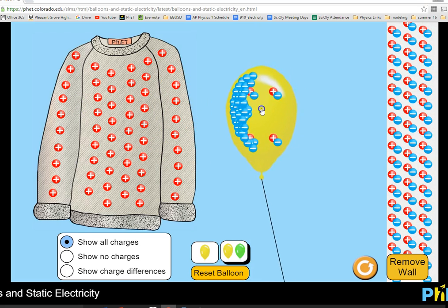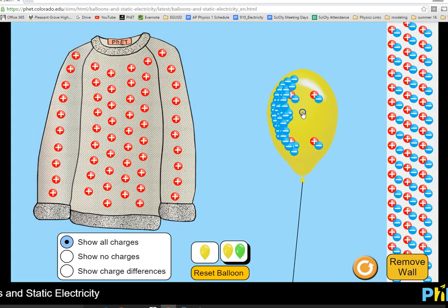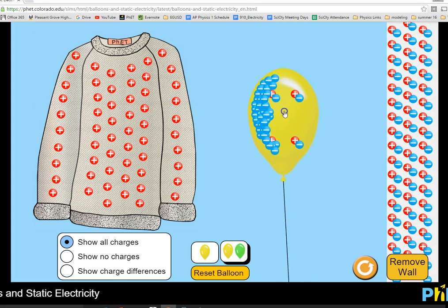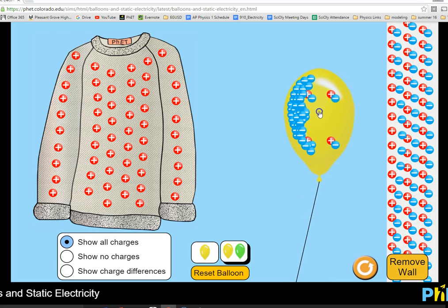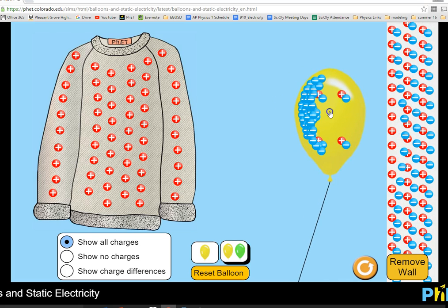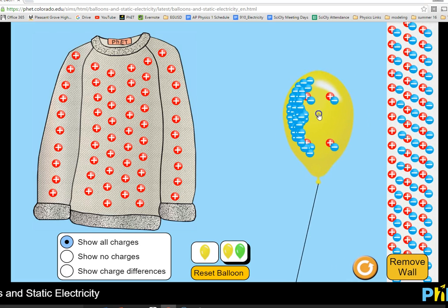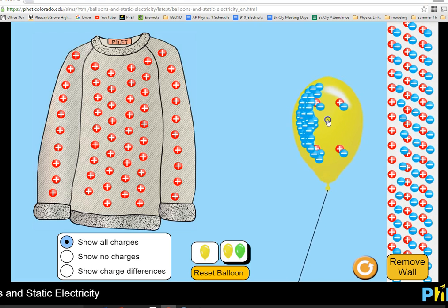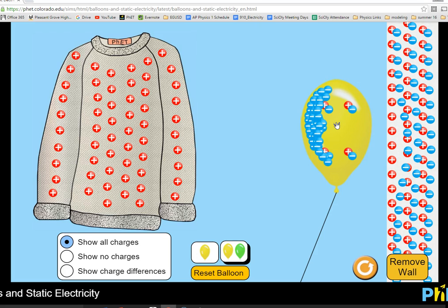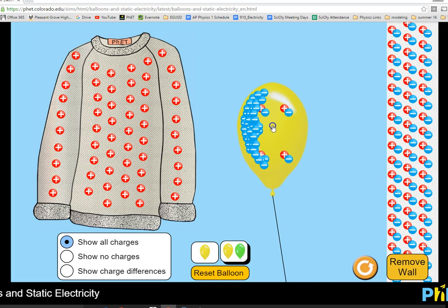So if you look at the wall, watch as I start bringing it close to the wall. The wall itself is neutral. But as I bring it closer, see those negatives being pushed away? The negatives are being pushed away, and we call this polarization. The wall is beginning to polarize. Negatives on one side, positives on the next.